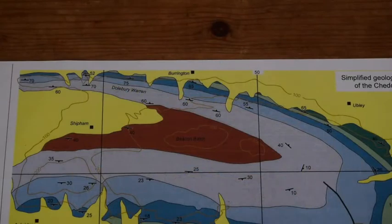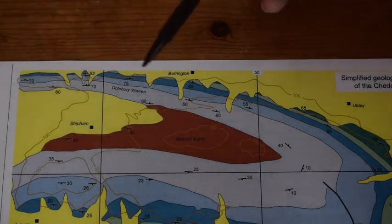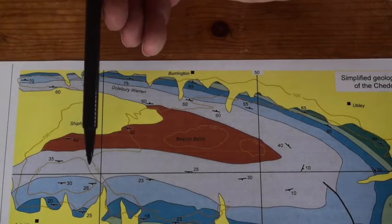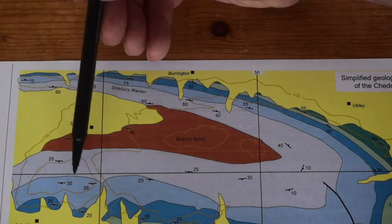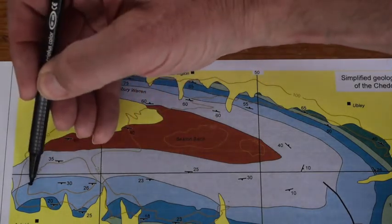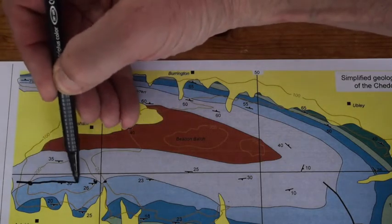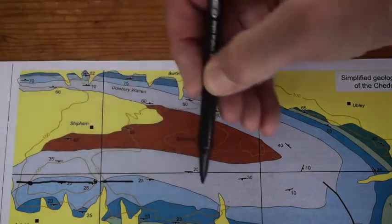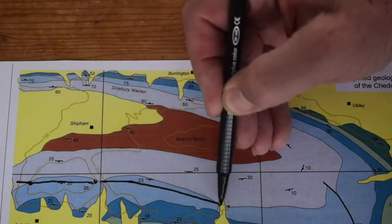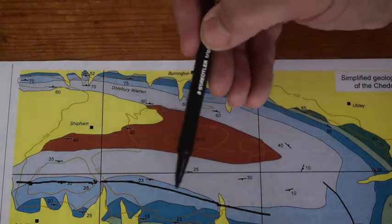Well we haven't got very many contour picks we can use, but I'll just pick one and we'll draw a structure contour on the top of the Black Rock Limestone, base of the Burrington Oolite, which is this boundary here. And I can see that we can pick structure contours here to define a structure contour like this, and another couple of points here that must mean it swings across.